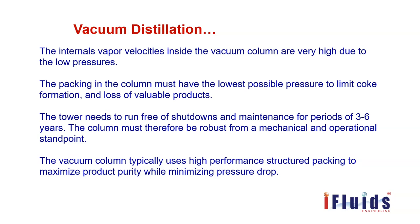The internal vapor velocity inside the vacuum column is very high due to the low pressure. The packing in the column must have the lowest possible pressure drop to limit coke formation and loss of valuable products. The tower needs to run free of shutdowns and maintenance for a period of at least 3 to 6 years, depending on the turnaround period determined by each refinery. This demands a robust structure — the vacuum column typically uses high-performance structured packing to maximize product purity while minimizing pressure drop.